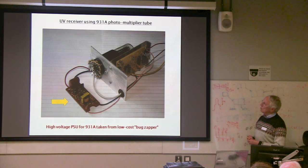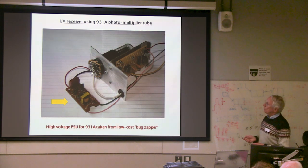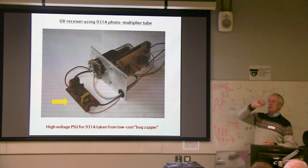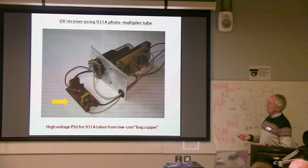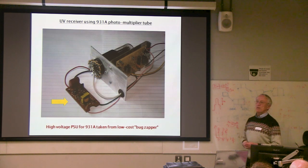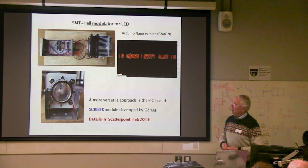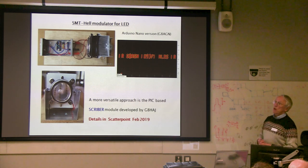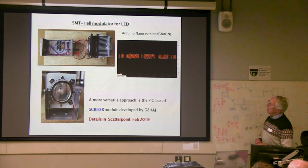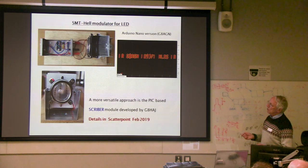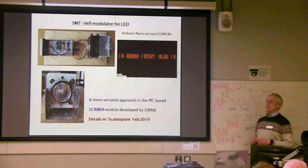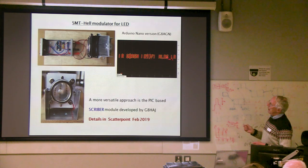I mentioned photomultiplier tubes — the type 931, which works at UV. The power supply for it came from a bug zapper — one of those tennis-racket style devices for killing insects in summer. The supply is 1000 volts or more at high impedance, but sufficient to drive a 931 tube. You can also modulate using pulse-width modulation. A variation is sequential multi-tone HELL, which is interesting for non-line-of-sight paths like cloud scatter using infrared — there's an infrared high-power LED array with a bullseye lens, and you can buy these off eBay for plant growing.